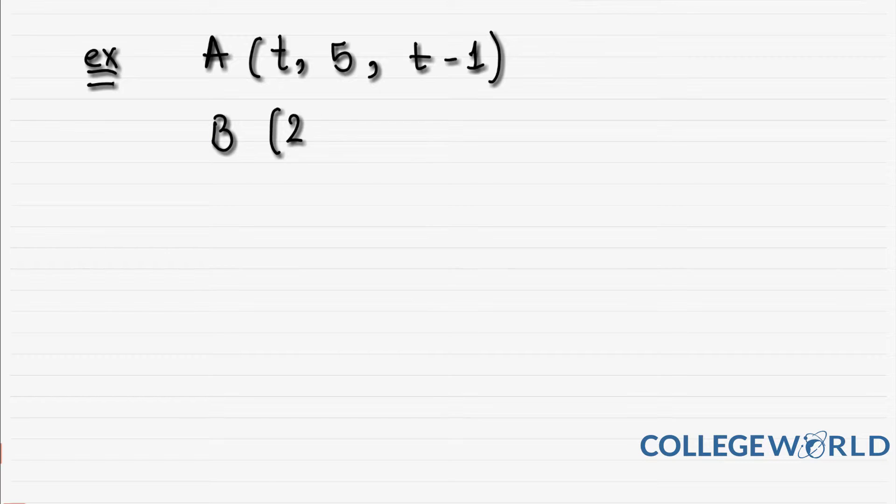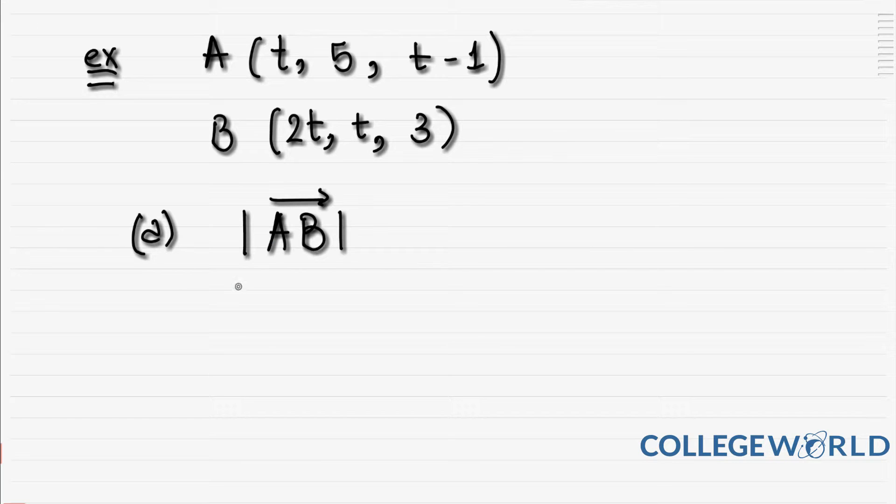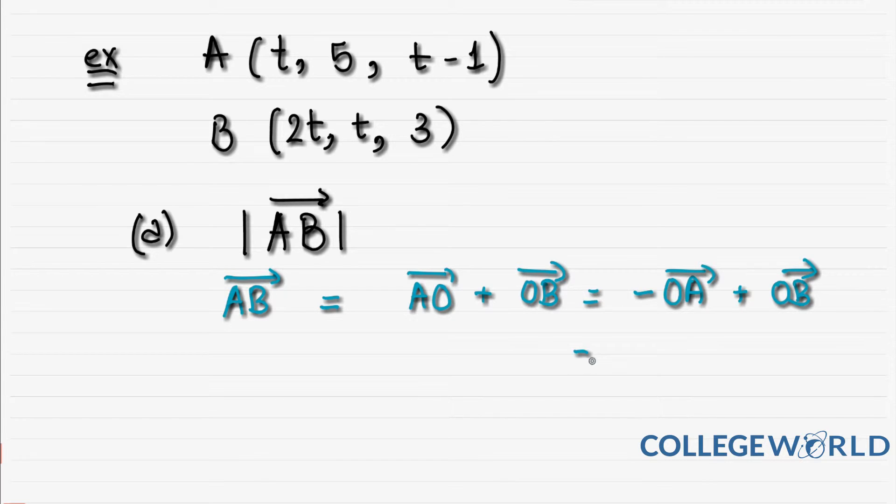The first part of the question asks you to find the modulus of AB. First, let us find AB as a vector. We know that AB is technically -AO plus OB. This is negative the position vector of A plus the position vector of B. So if we write it, it's negative (2t, 5, t-1) plus (2t, t, 3).